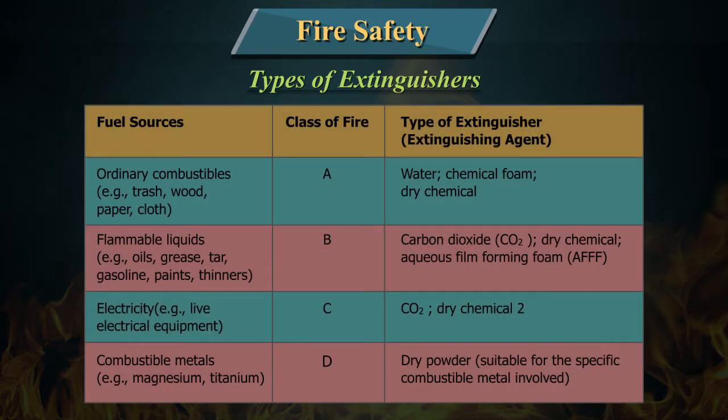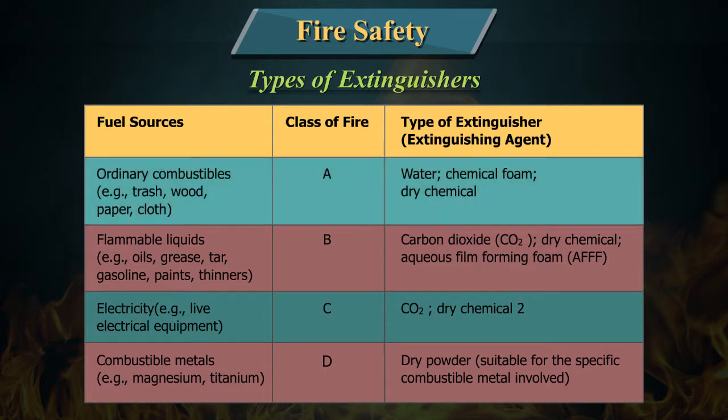Now let's see the chart. Fuel sources — Class of fire — Type of extinguisher. Ordinary combustibles, examples: trash, wood, paper, cloth. The class of fire is A.